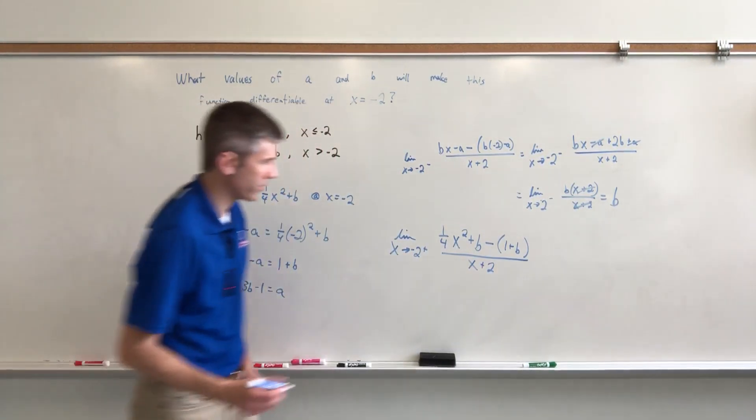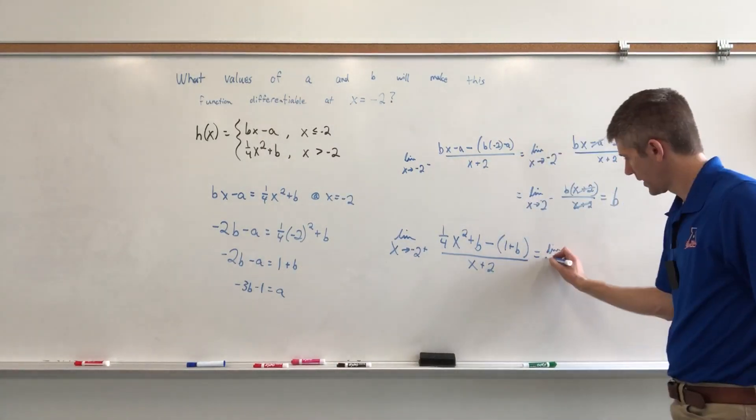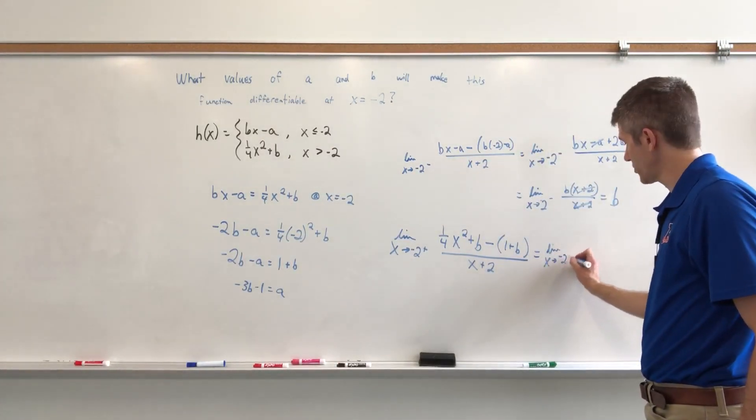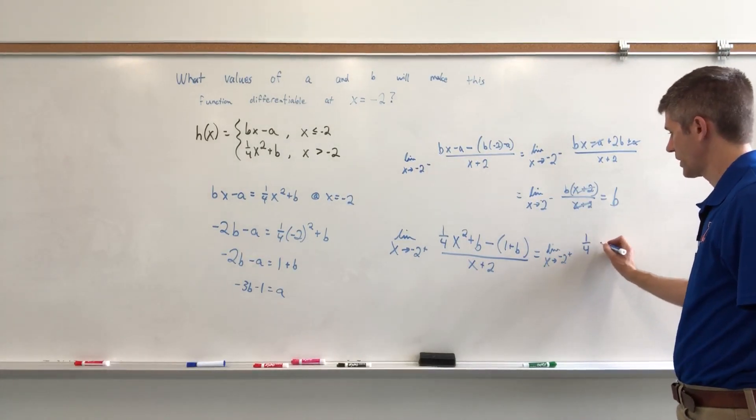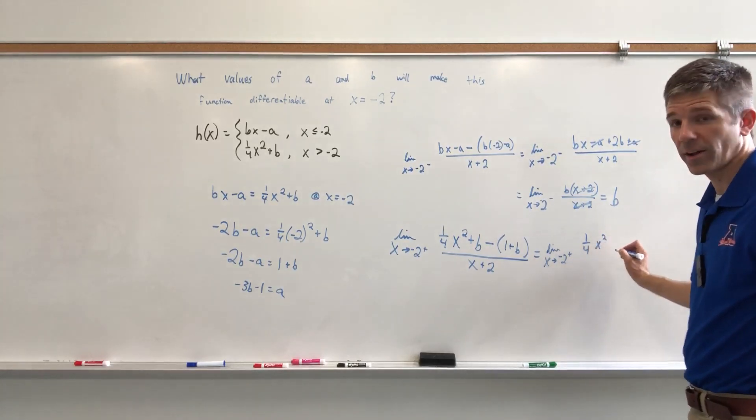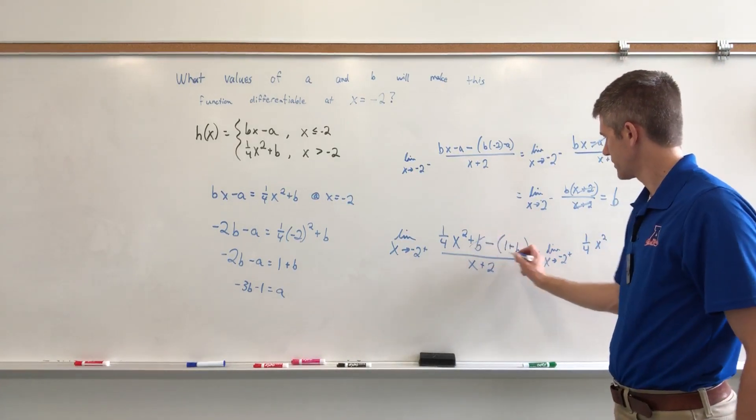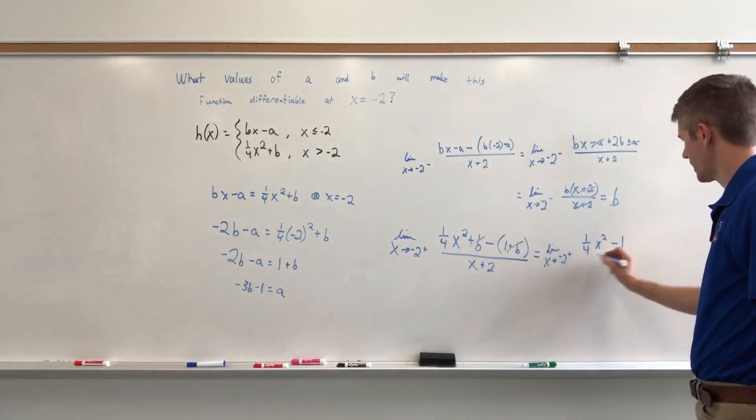So we will have, this is a mess, the limit as X approaches negative 2 from the right of one-fourth—let's stretch this out an extra step—X squared. I was debating it. The B's will cancel. And then minus 1 over X plus 2.